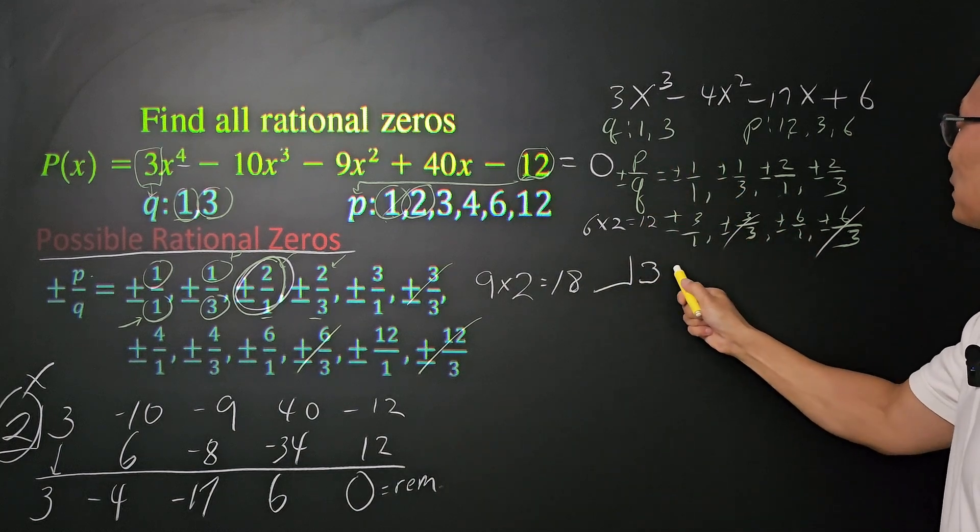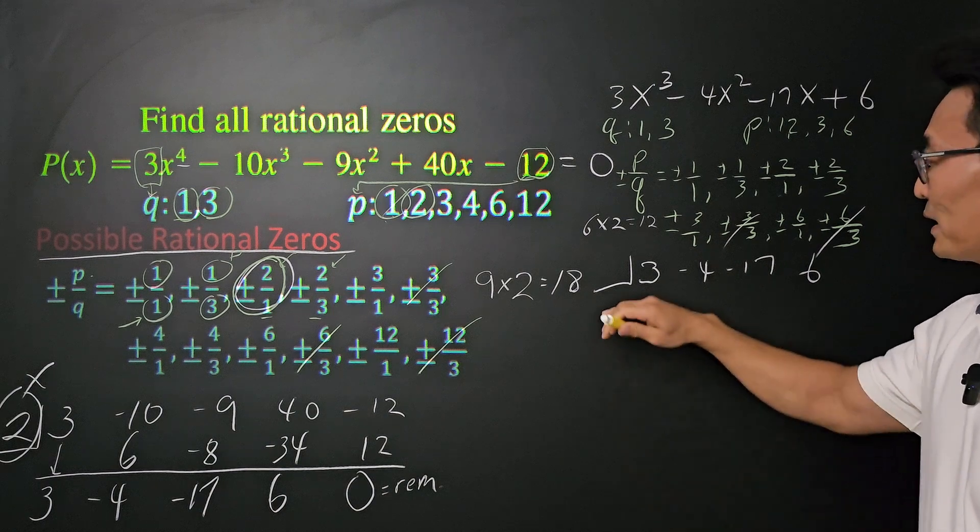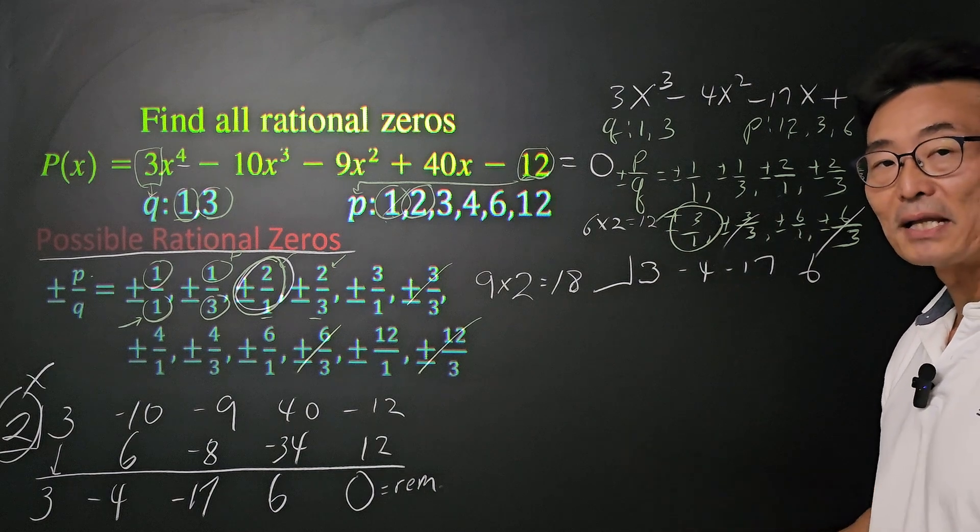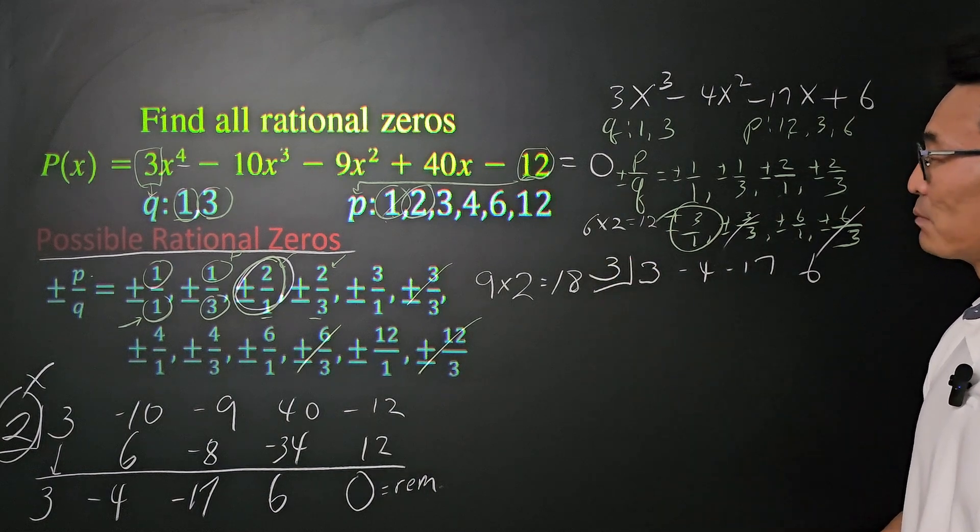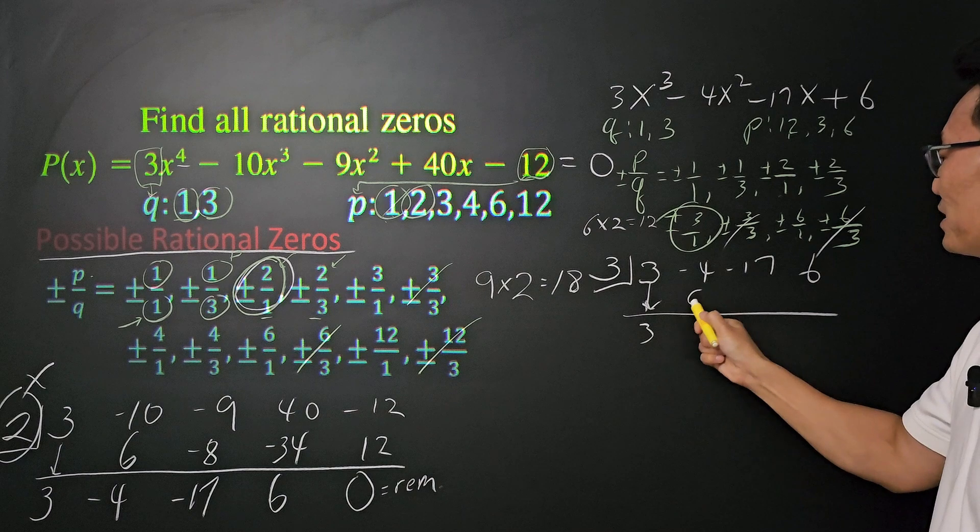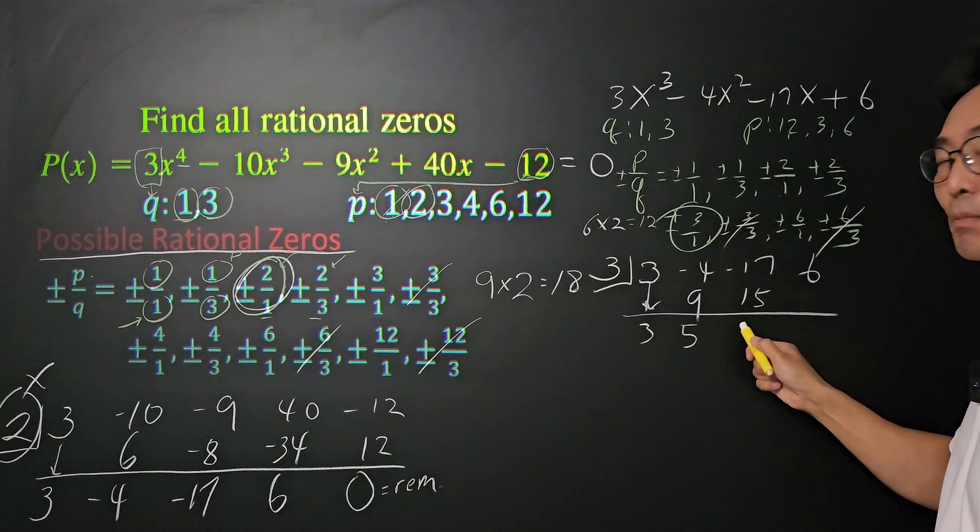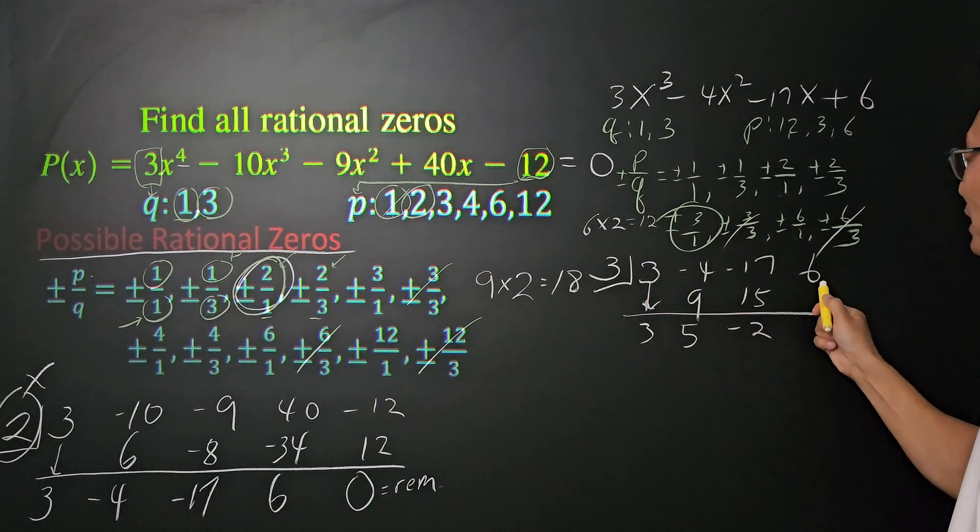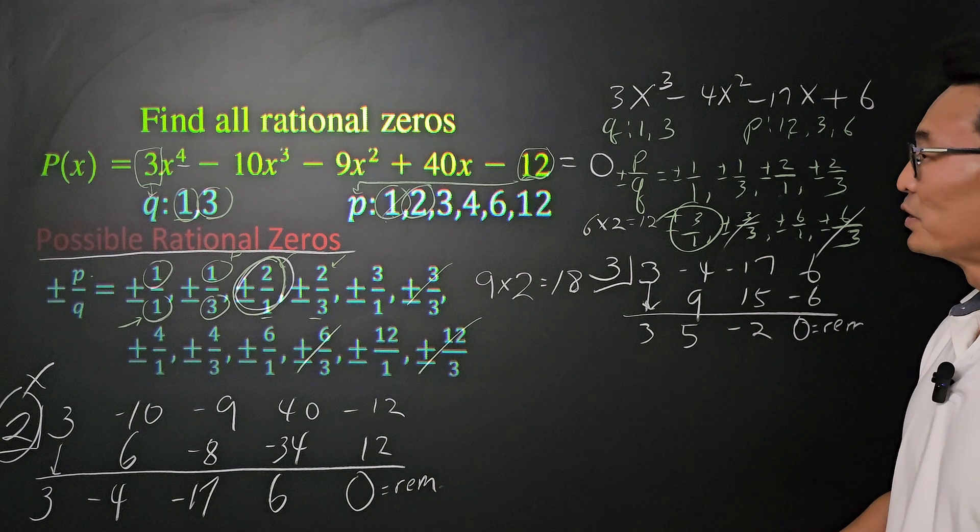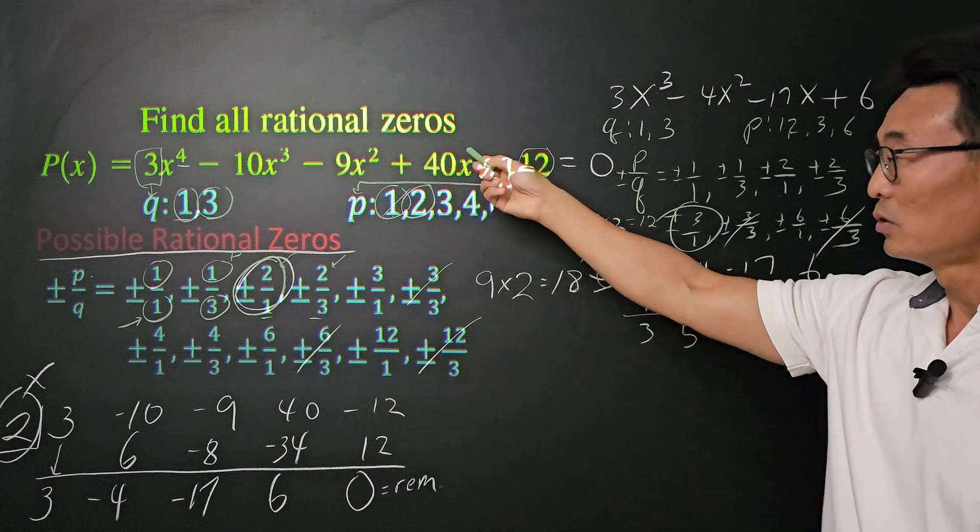We start with the 3, negative 4, negative 17, and 6. And which number are we going to start by dividing? I'm going to be using the 3 that we have. It may work. It may not work. Let's find out. So, if we start and divide it by 3. Again, the 3 comes down. 3 times 3 is 9. Add it up and down, we get a 5. 3 times 5 is 15. Add it up and down, we get a negative 2. 3 times negative 2 is negative 6. And we get a remainder of 0 once again, which means that we know for sure that 3 is one of the x values as well, or one of the zeros.